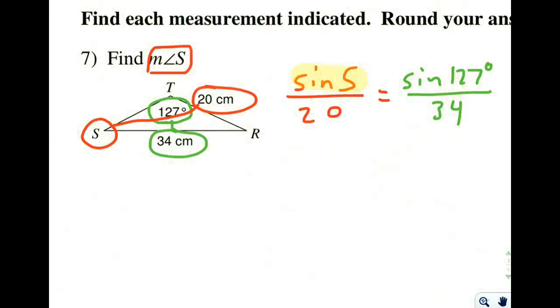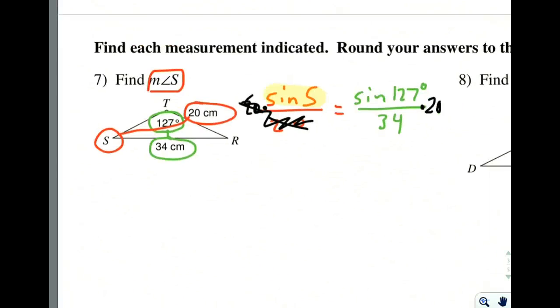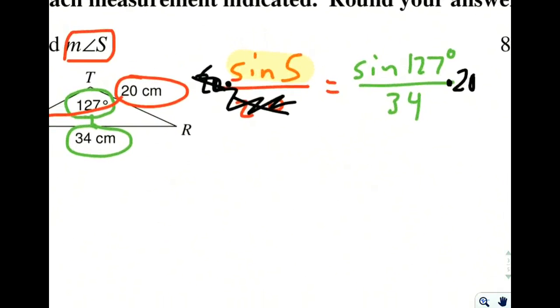First thing we do is multiply both sides by 20. If we multiply both sides by 20, then these 20s will cancel out, giving us just sine S over on this side.